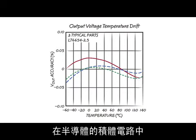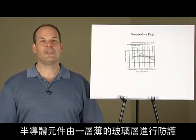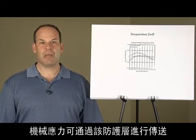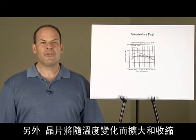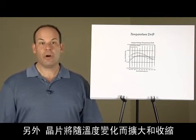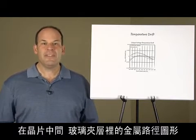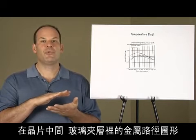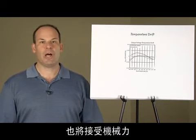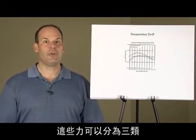In a semiconductor IC, the semiconductor components are protected by a thin layer of glass through which mechanical stress may be transmitted. Further, the die itself will expand and contract over temperature and will deform due to mechanical force applied by the packaging materials. Within the die, metal traces sandwiched between layers of glass will also apply mechanical force. These forces may be placed into three categories.